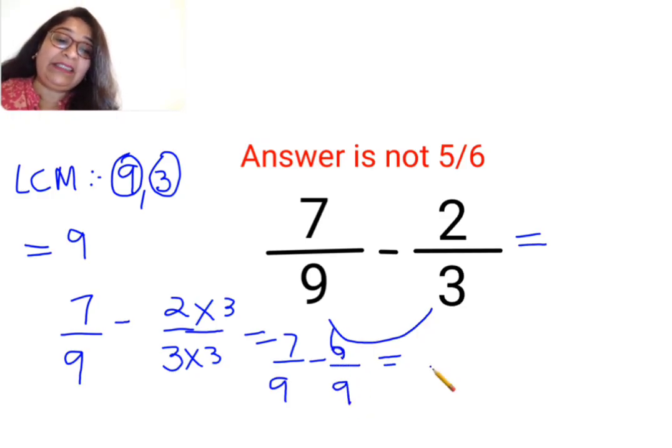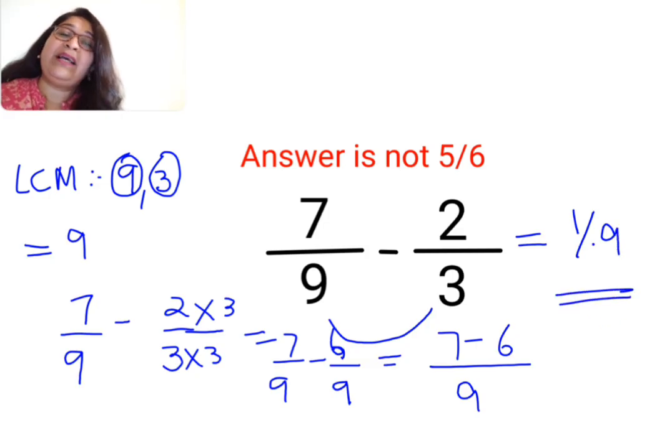Now since the denominators are equal, I am basically going to do the subtraction 7 minus 6. So the answer for this question is supposed to be 1 upon 9. I hope this is very clear to everyone.